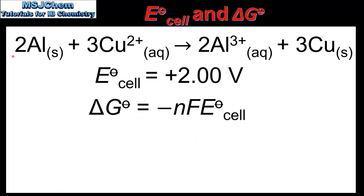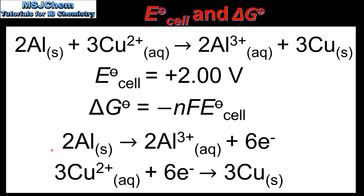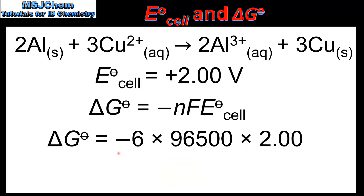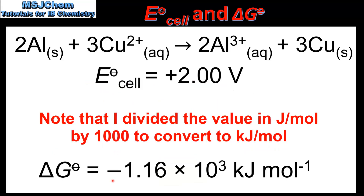In our last example we'll calculate the delta G for this reaction. The cell potential for the reaction is positive 2.00 volts. Once again to determine N we look at the two half equations for the reaction. In this example there are 6 moles of electrons transferred in the reaction. We then input the values into the equation, which when rounded to 3 significant figures is negative 1.16 times 10 to the 3 kilojoules per mole.